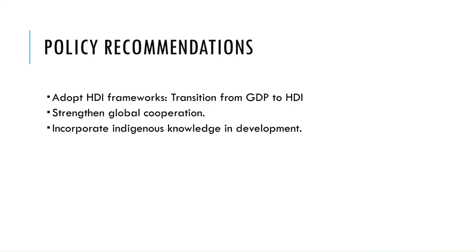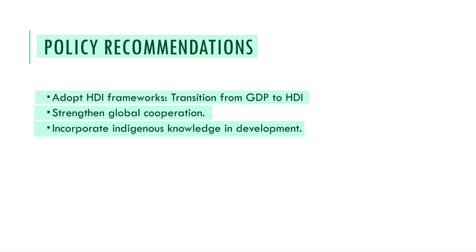To achieve sustainable development, we need actionable and inclusive policies. Three key recommendations include: first, adopting HDI frameworks — transitioning from GDP to tools like the Human Development Index that focus on people's health, education, and quality of life alongside economic growth. Second, strengthening global cooperation — collaborative efforts such as the Paris Agreement are essential for coordinated action on climate change and resource depletion. Third, integrating indigenous knowledge — policies should respect and incorporate traditional practices, as community-led conservation efforts often lead to better results than top-down approaches.